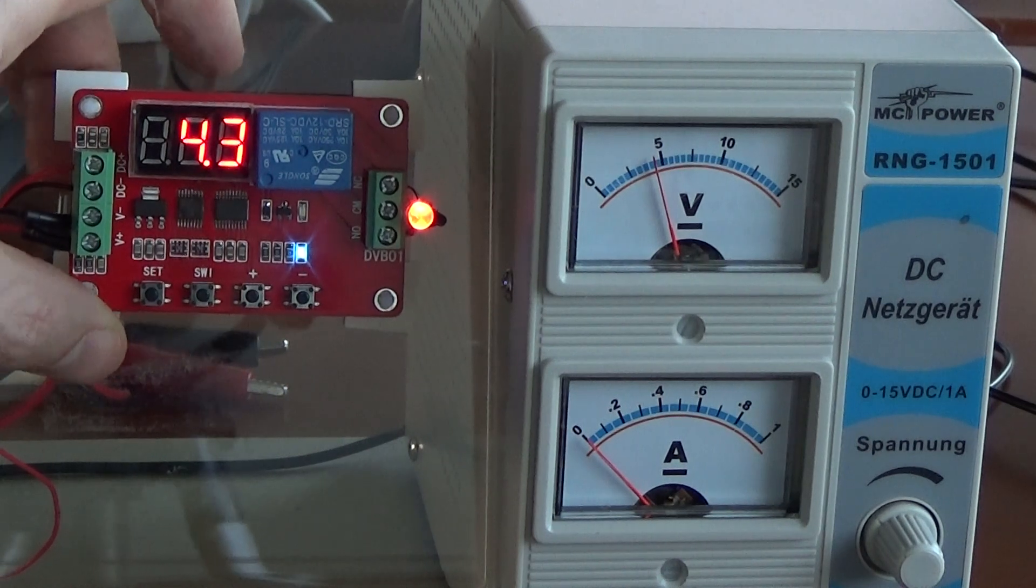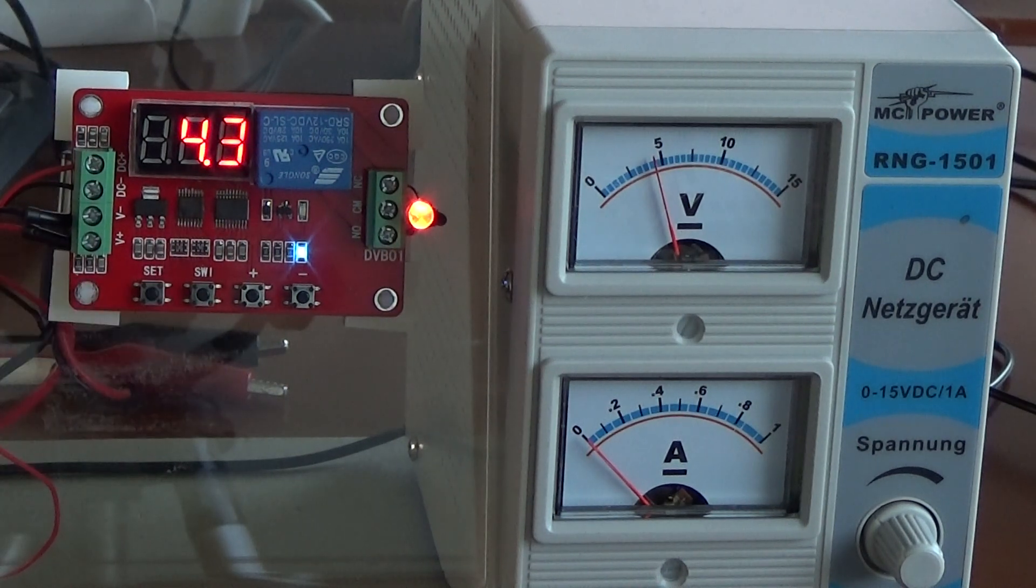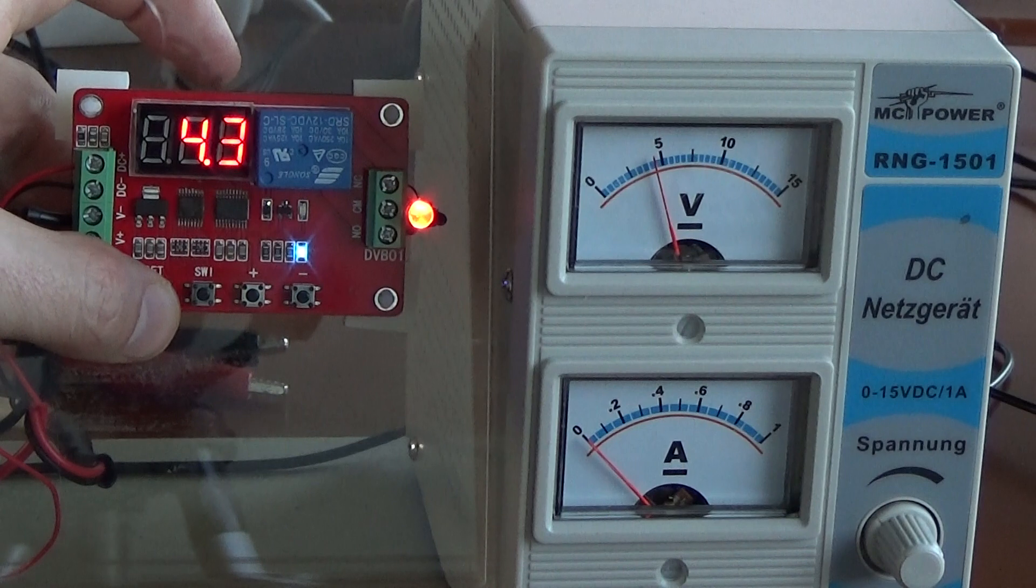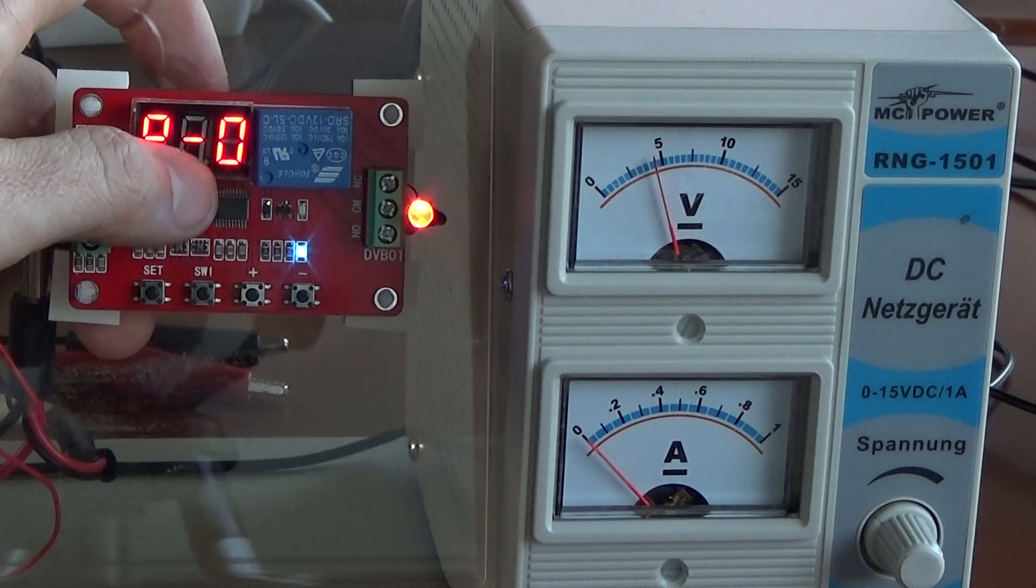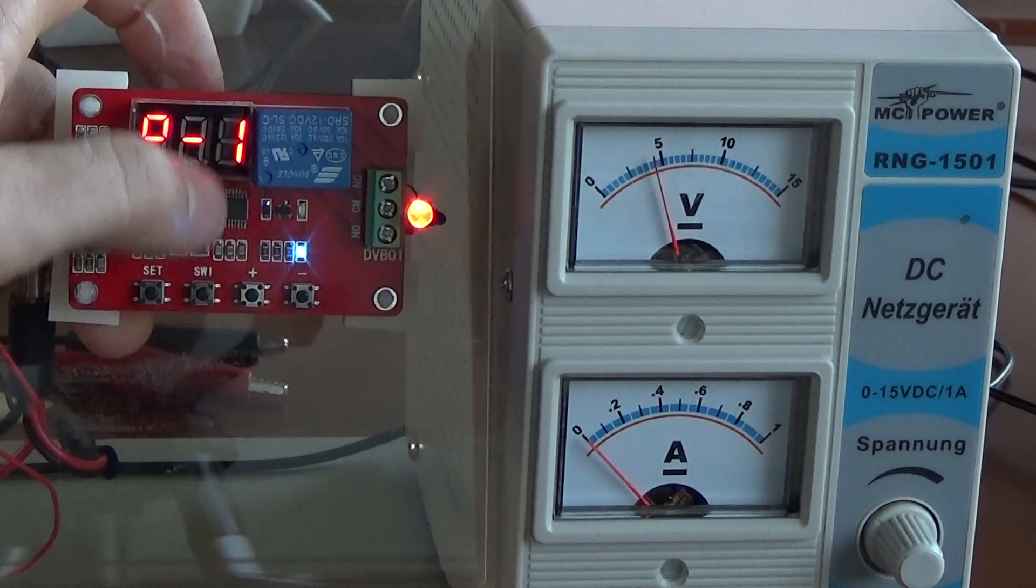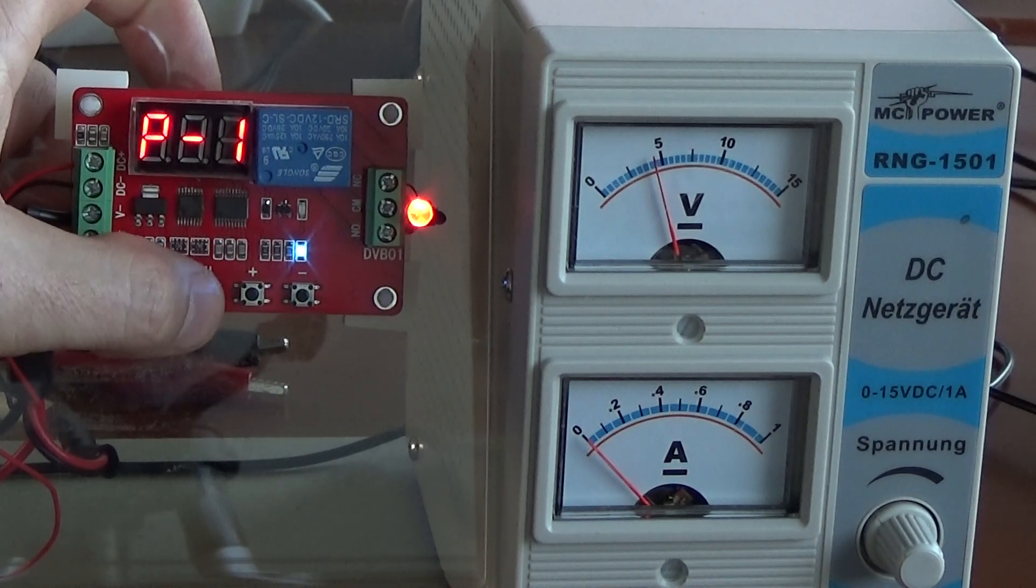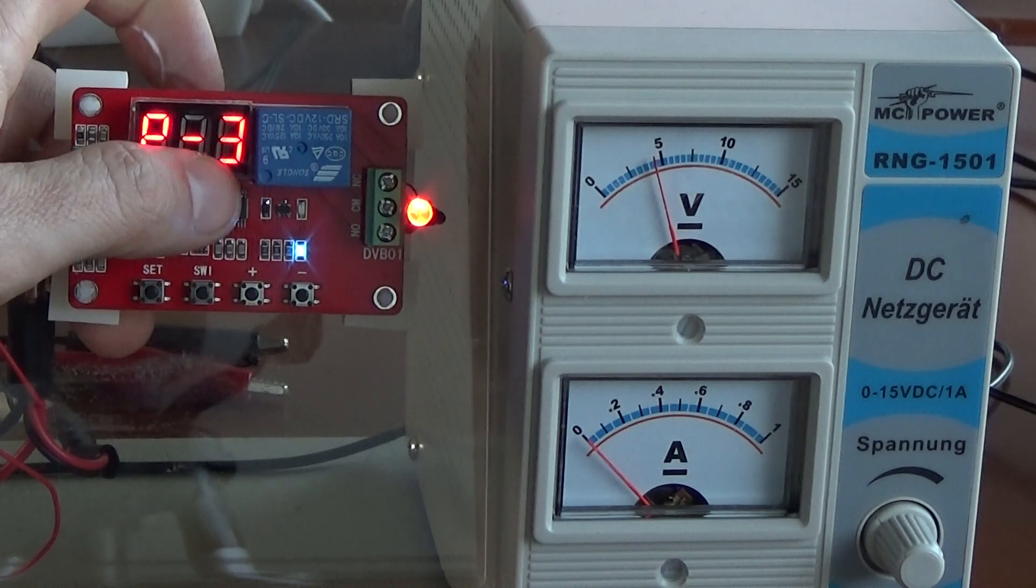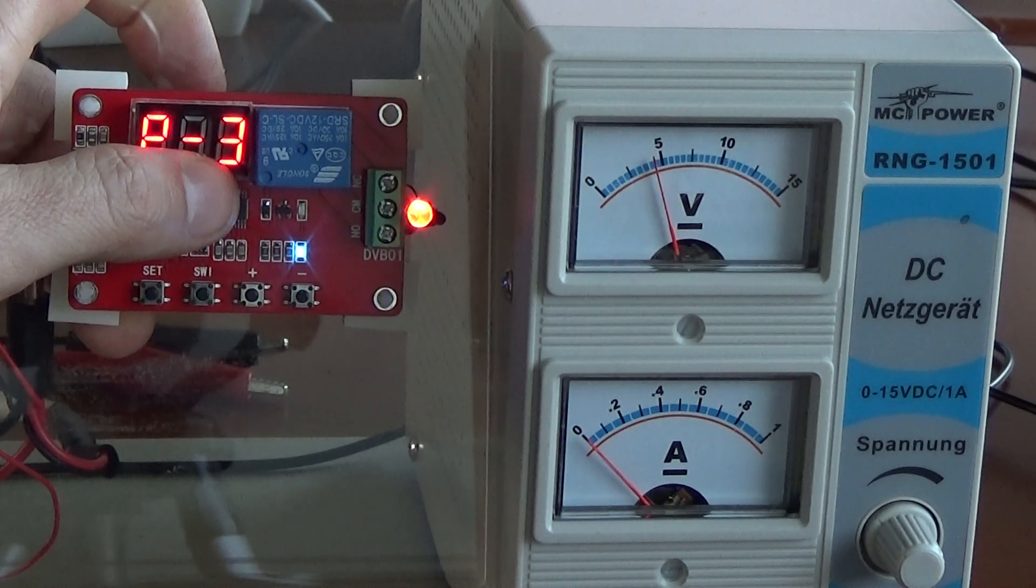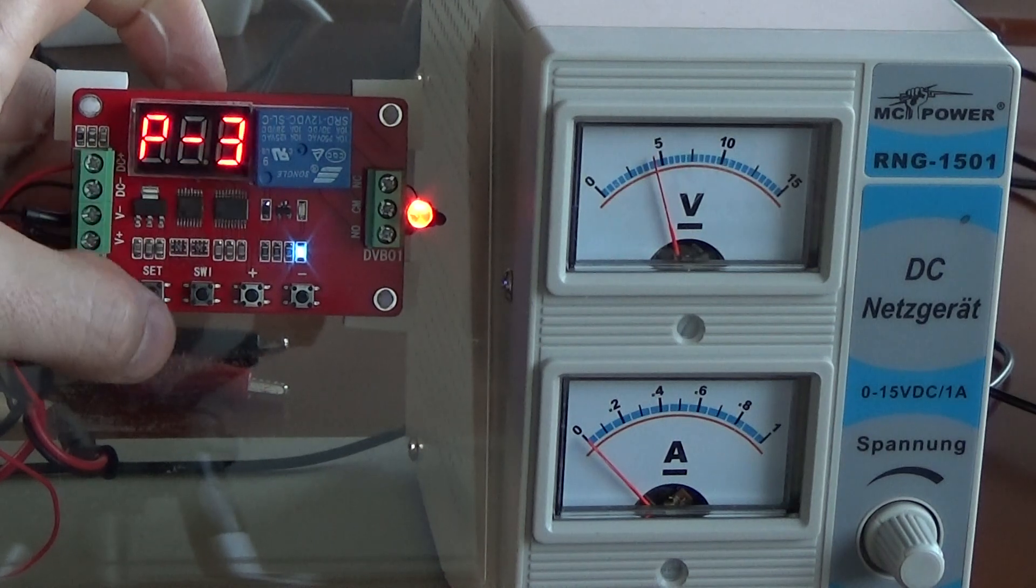To enter the programming, if I want to select function number two, I have to hold down the set button. I can then switch to the first voltage, the second voltage, and if you want to adjust the voltage meter inside the unit, it is program number three.